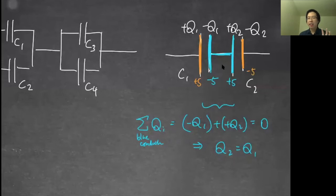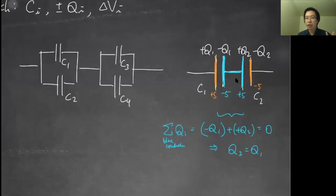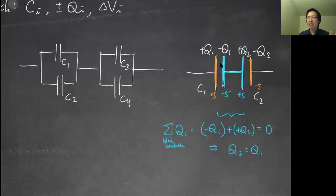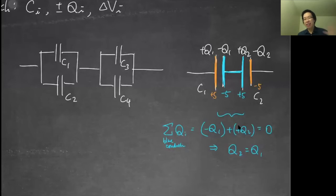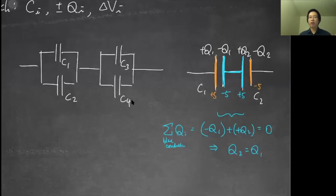What I want to show you is how to deduce these relationships, not memorize them. Some students or even lecturers would just say: when in series, q1 equals q2; when in parallel, it's different. That is extremely difficult to remember and you don't learn anything. Also, if I give you a more complex circuit with c1, c2, c3, c4, you can't just ask: are they in series or parallel?